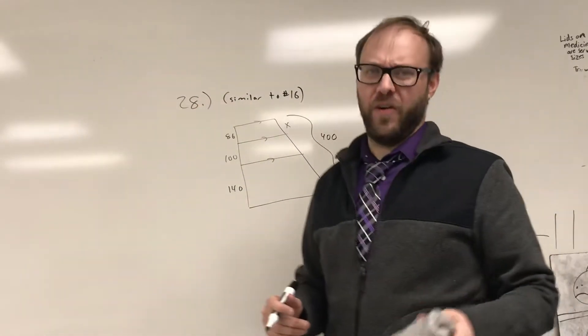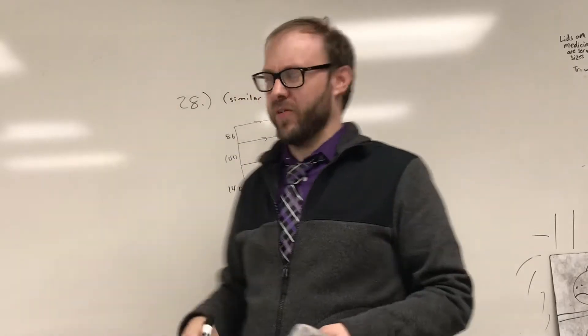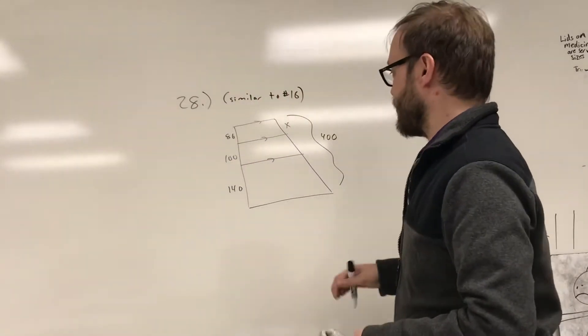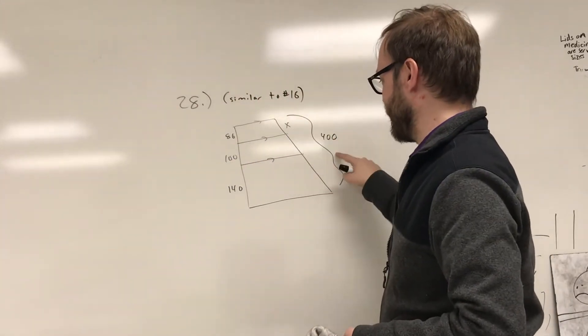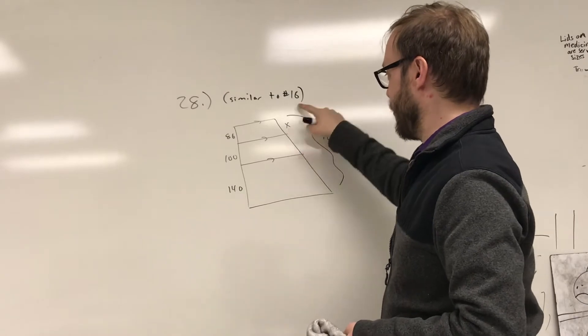So again, don't try to do all these at the same time. Pick one variable, get a relationship, and go from there. So I look at the side that has the least information. I just have the upper part and the whole.